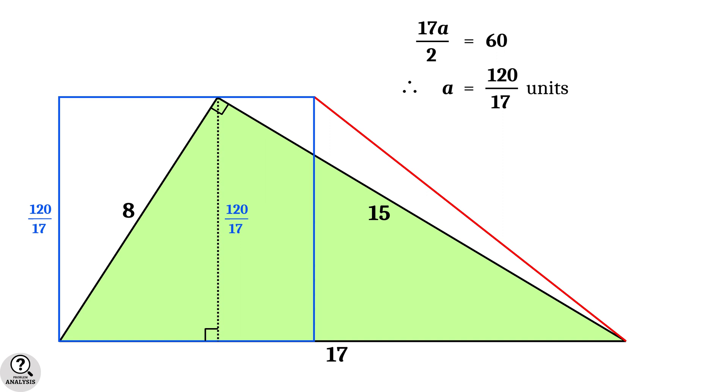This value is approximately equal to 7.0588 units. Therefore, in the diagram of our problem, side length of the square A is equal to 120 divided by 17 units.